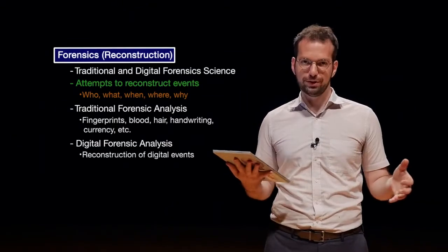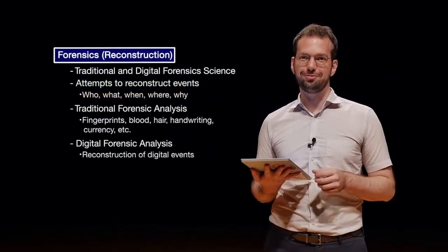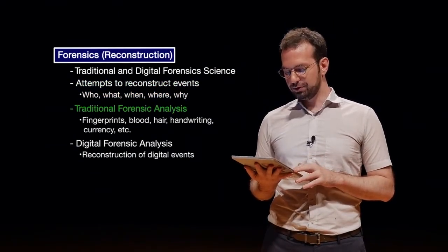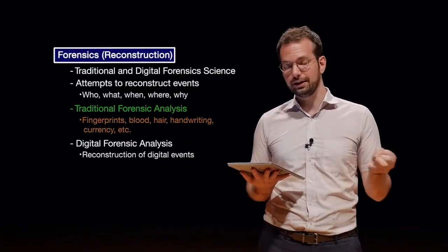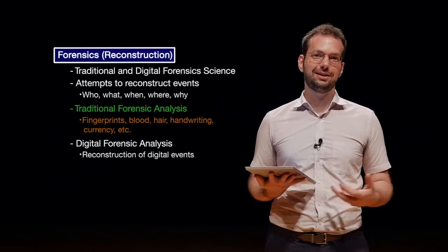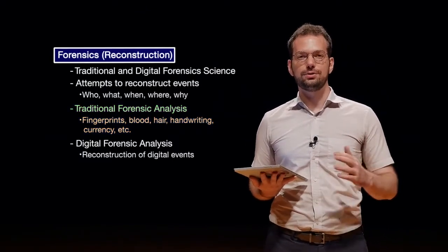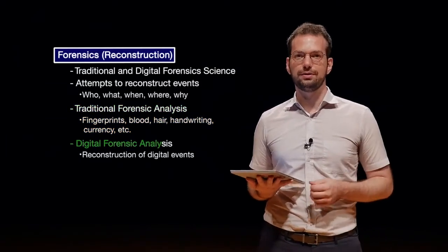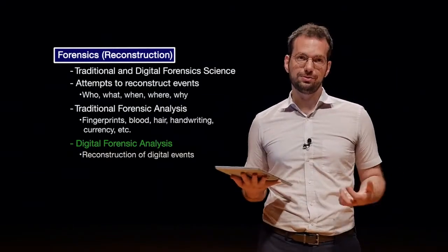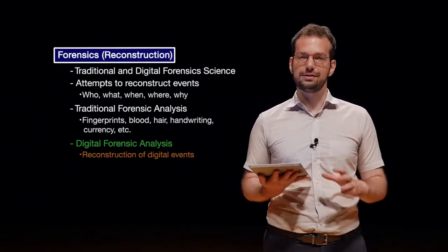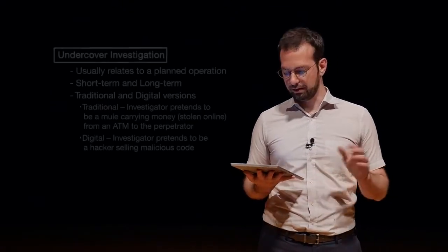Can we answer all of those questions about this case, this computer, this device, or whatever it is? Traditional forensic analysis looks at things like fingerprints, blood analysis, hair analysis, DNA, handwriting analysis, and currency investigation — there's a huge list of forensic sciences analyzing all sorts of different sources. Digital forensic analysis is reconstruction of digital events, reconstructing what happened on digital devices, and that's a whole area by itself which we'll cover in the second part of the course.